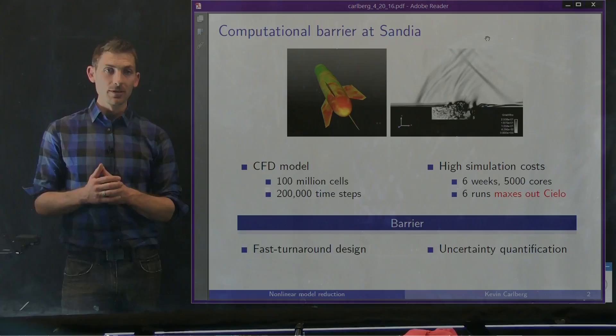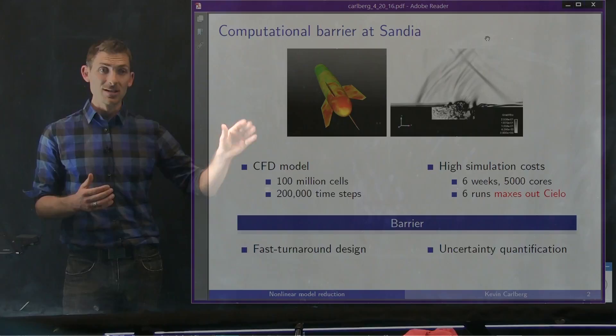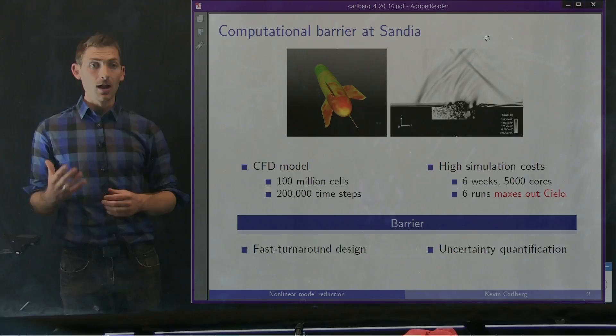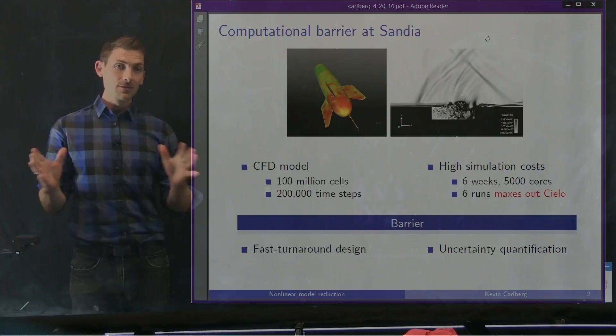This is a very expensive simulation. Because it's a fluid-structure interaction problem, to make it tractable we do a one-way coupling from the fluid to the structure. The dominant computational cost is in the CFD simulation — a 3D compressible Navier-Stokes simulation with a turbulence model. This CFD model has a hundred million cells and two hundred thousand time steps to get the long-time response, and as a result the simulation consumes six weeks on five thousand computing cores.